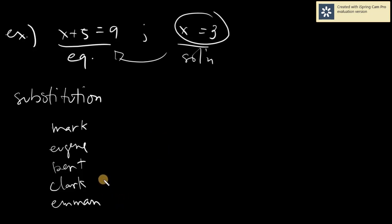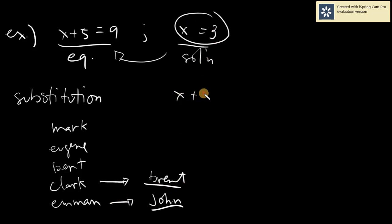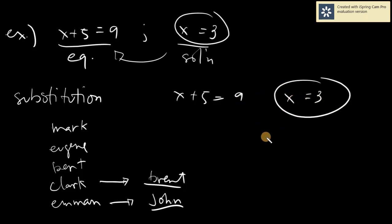Eman is tired and Clark is very tired as well. We will replace Clark with Brent and Eman with John. Meaning, Brent replaces Clark only, and John replaces Eman only — whatever should be replaced gets replaced only. The same applies here: in X plus 5 equals 9, with X equals 3, all X's will be replaced with 3.